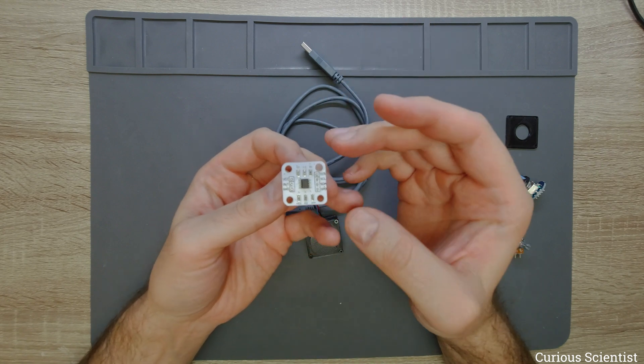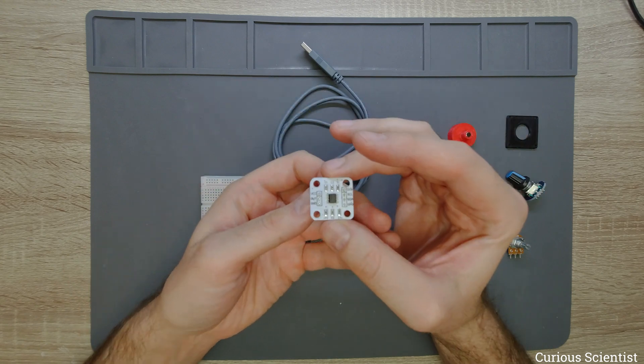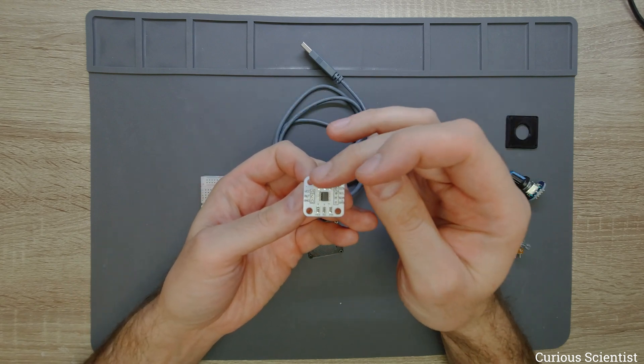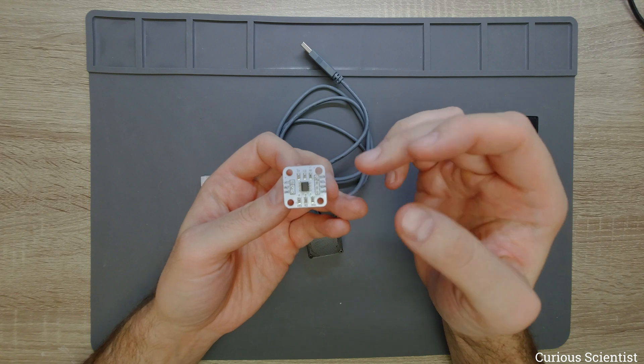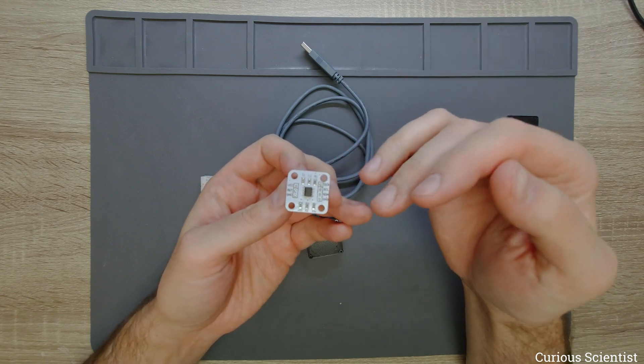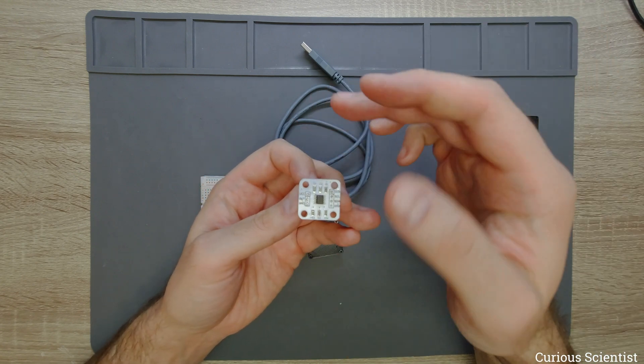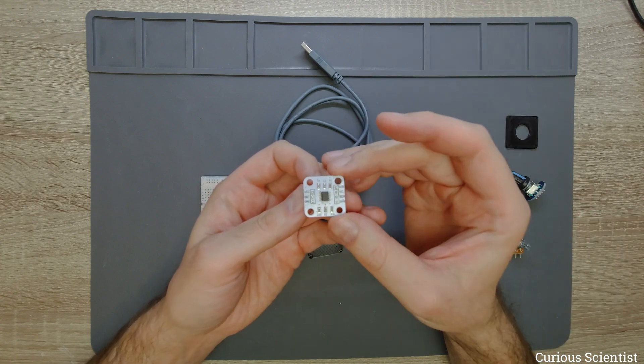And basically this will make this chip into an absolute encoder, so it can locate the magnet and its position along a circle, so 360 degrees.